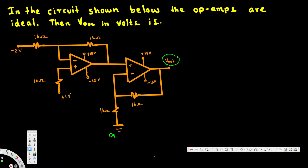For the second non-inverting op-amp, we can find V_out using the formula: V_out = (1 + R_f / R1) × V_in. The input voltage for this second op-amp will be the output of the first op-amp, which we'll call V_o1. R_f is the feedback resistance and R1 is the input resistance.